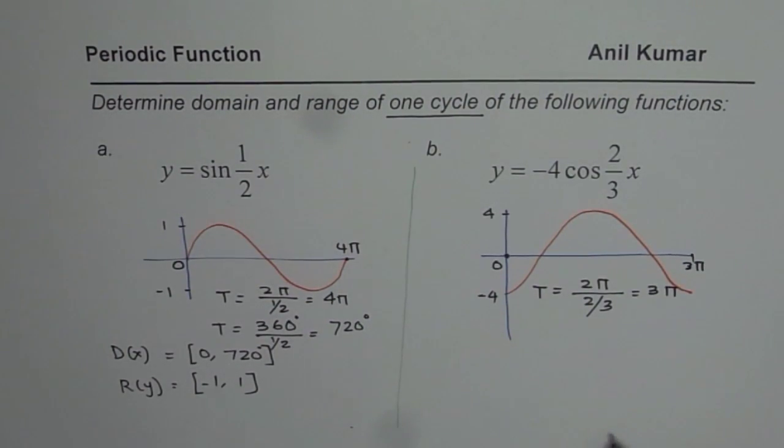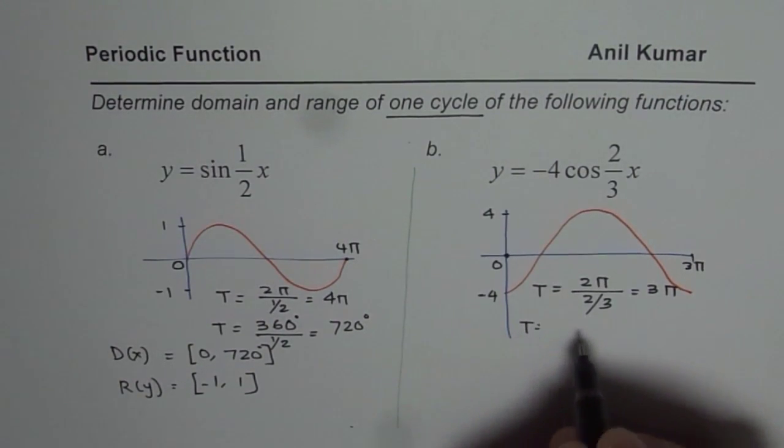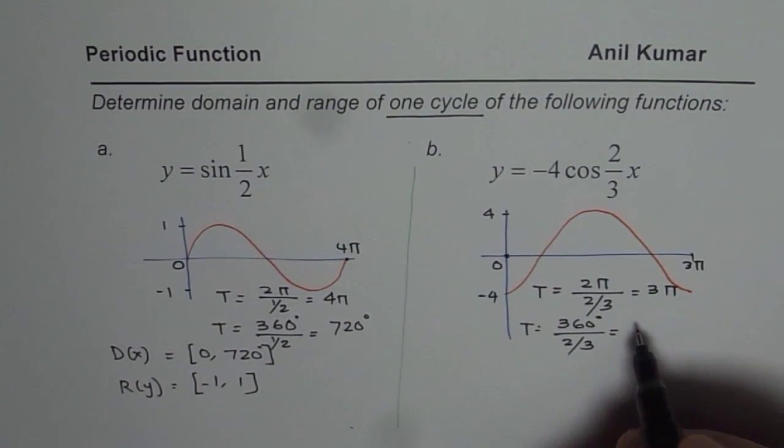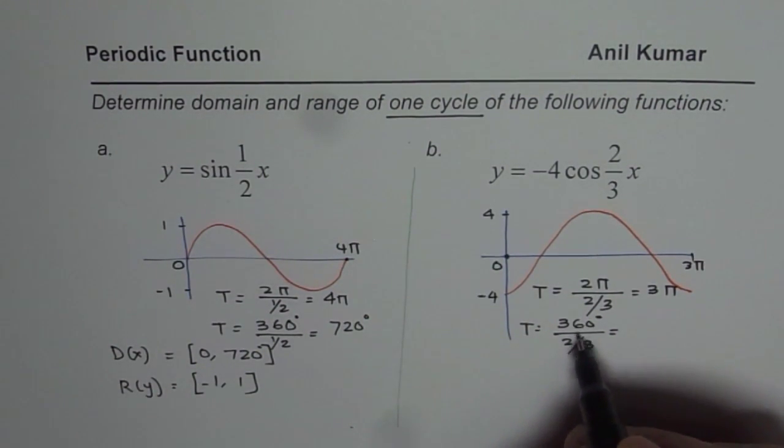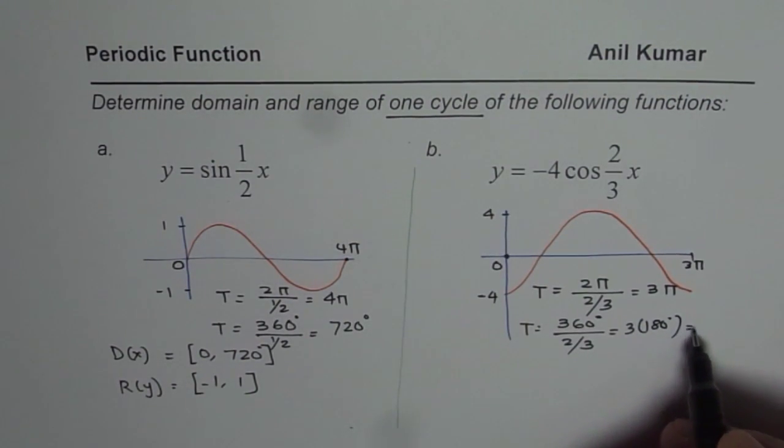In degrees, it will be 360 degrees divided by 2 over 3, which is going to be, you do half of this which is 180, 180 times 3, so it is 3 times 180 degrees, which is 540 degrees.